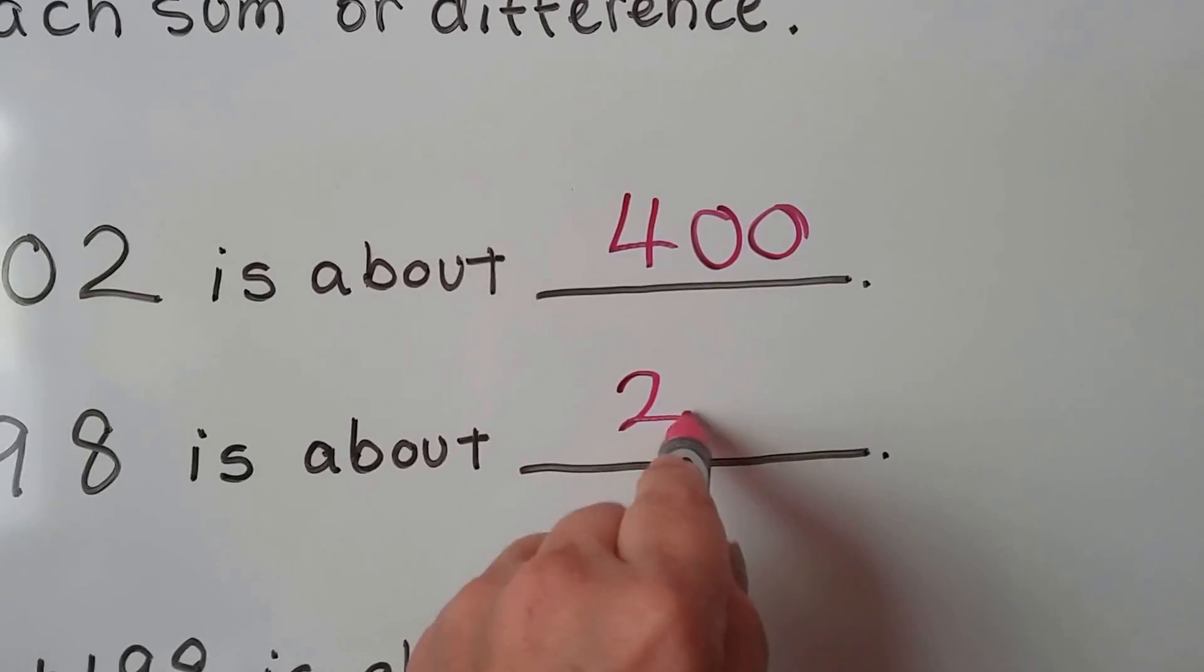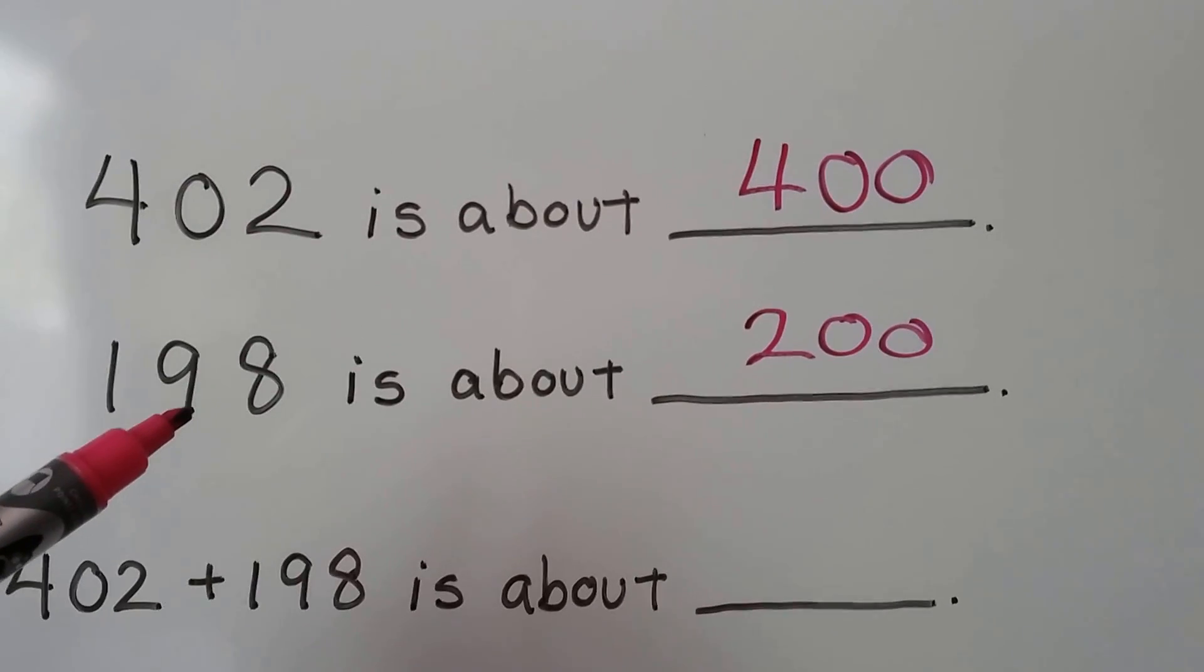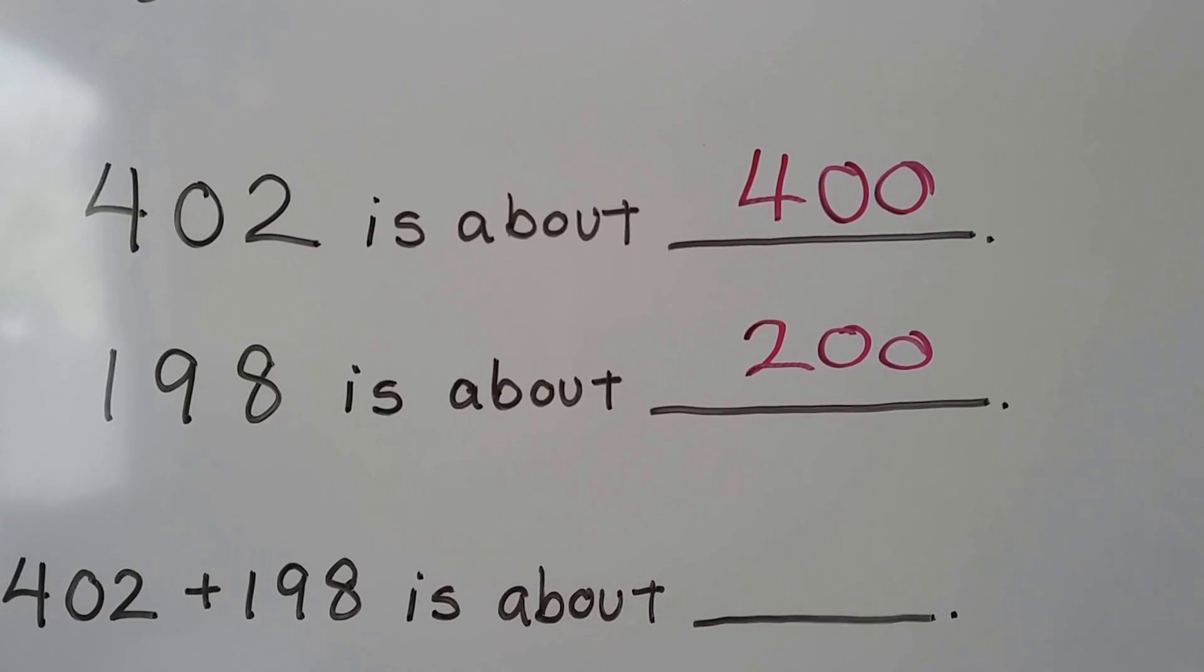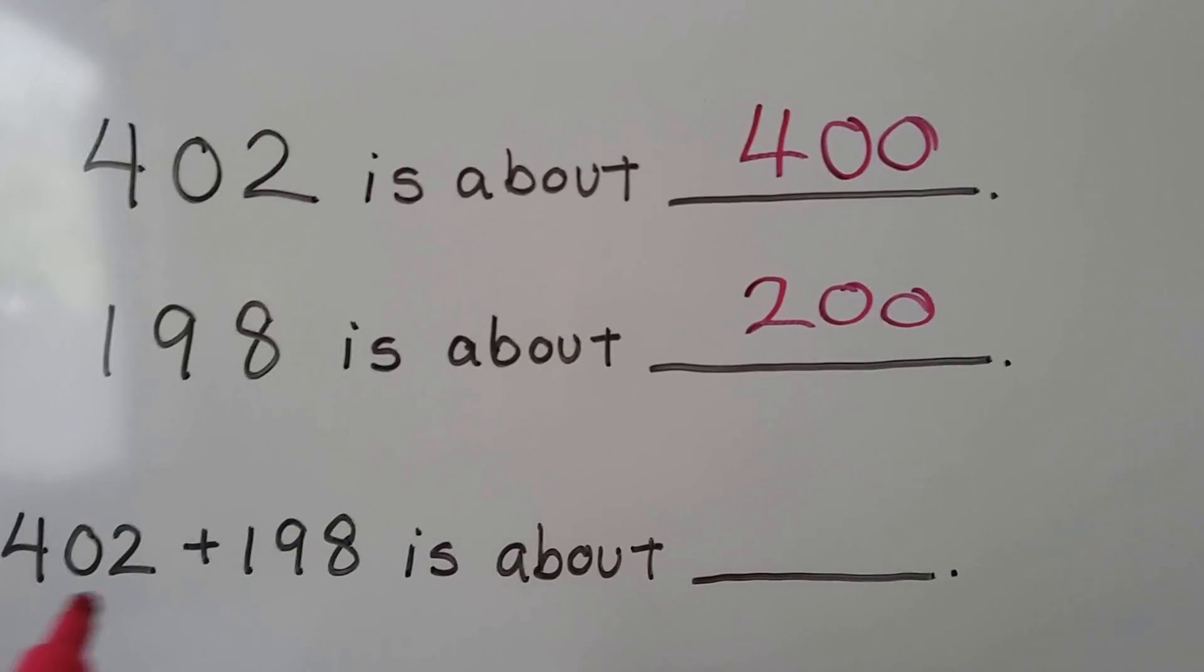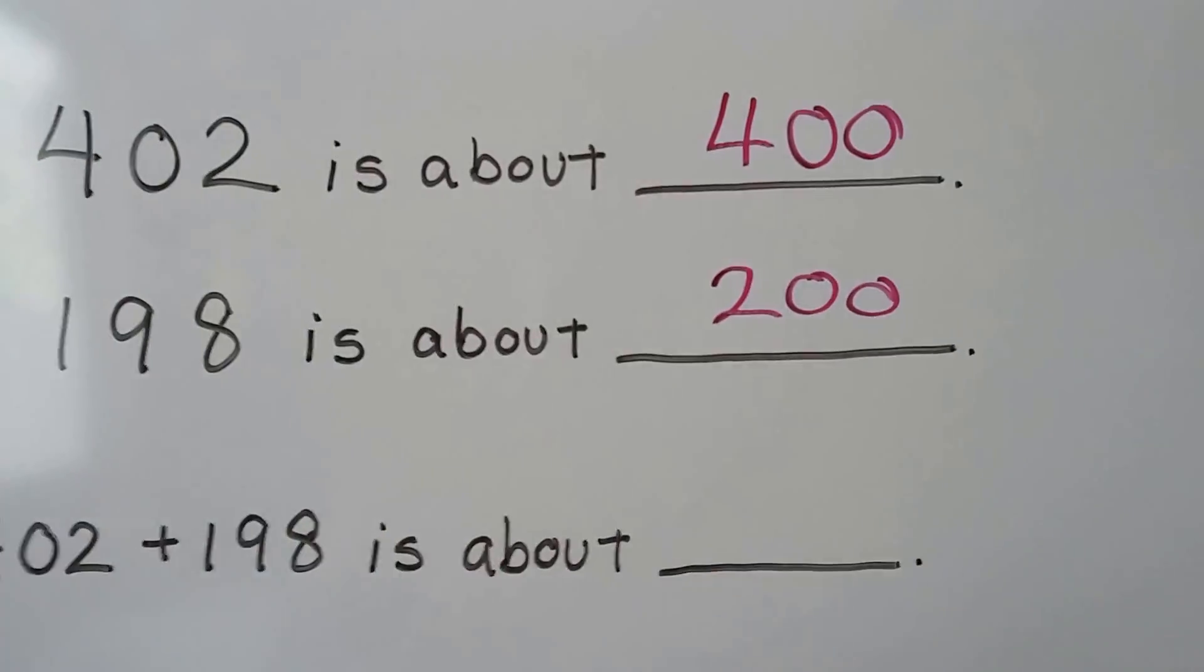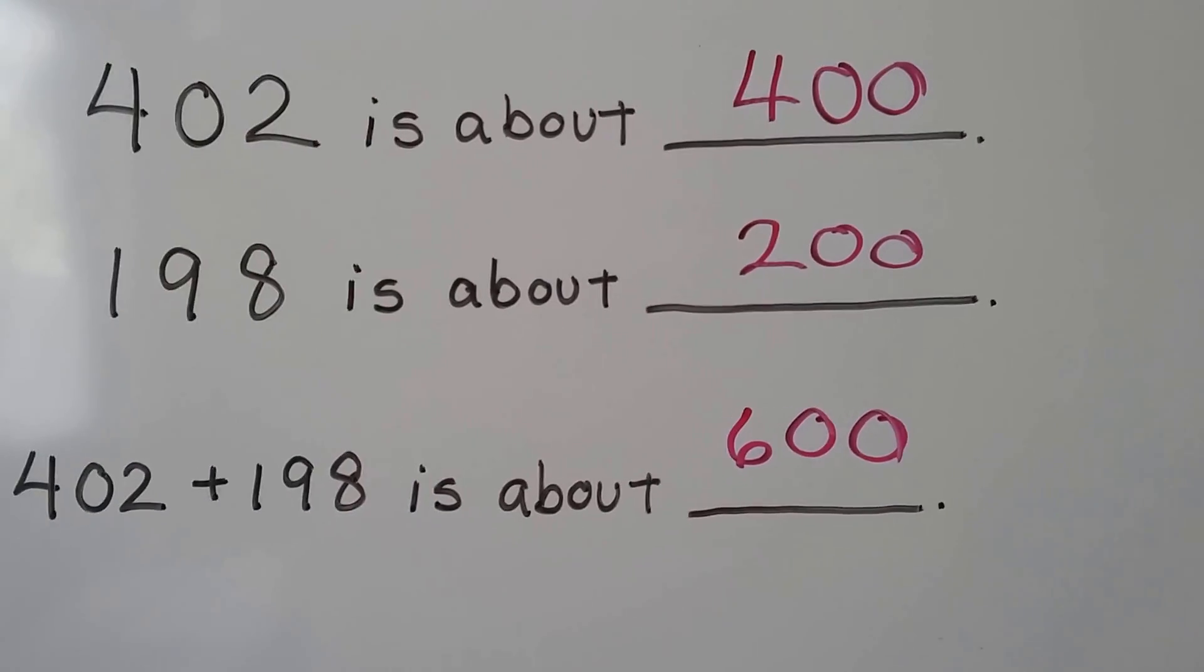So 402 plus 198 is about, if we added these, it would be about 600.